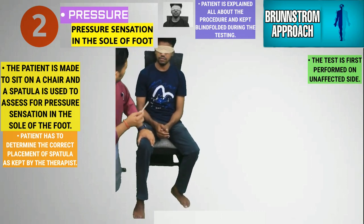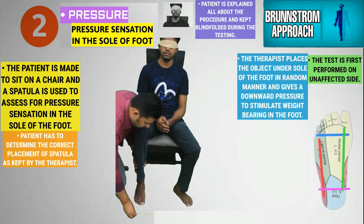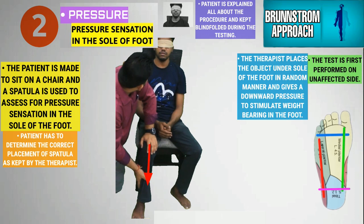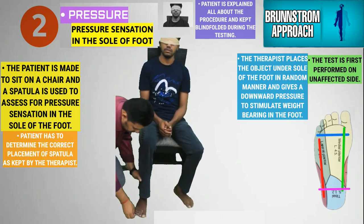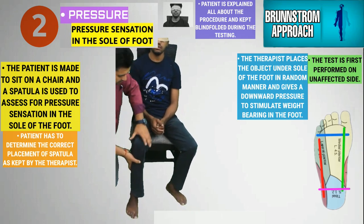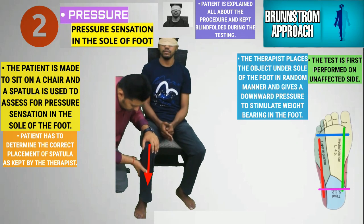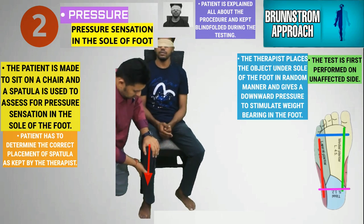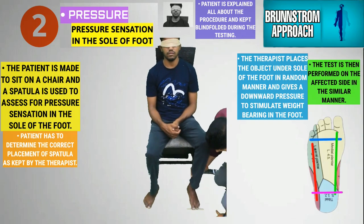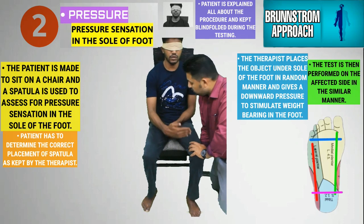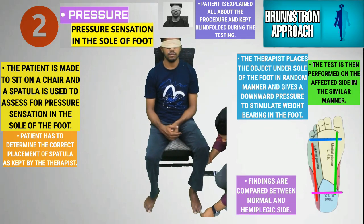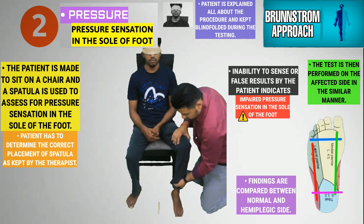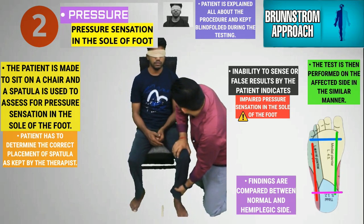The patient remains blindfolded and the therapist places the flat object under the foot in a random manner. The therapist then exerts a downward pressure from the patient's knee towards the foot to simulate weight bearing. The patient is asked to identify how he or she appreciates the object under the foot. The therapist next checks the sole sensation on the affected side in a similar manner and the findings are compared. Inability to appreciate the object or its position indicates impaired pressure sensation.